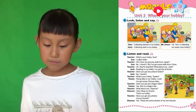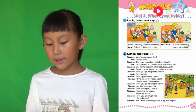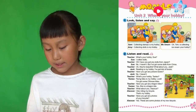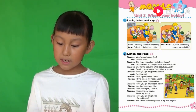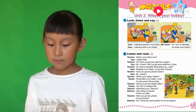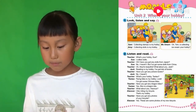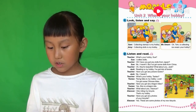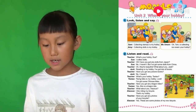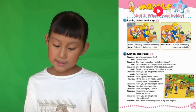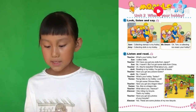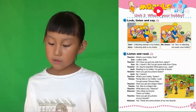Two. Listen and read. What's your hobby, Sue? 什么是你的爱好，Sue？I collect dolls. 我收集娃娃。Have you got any dolls from Japan? 你有没有任何日本的娃娃？No, I haven't. 不，我没有。But I've got some dolls from China. 但是我有一些中国的娃娃。